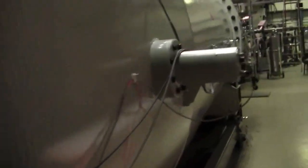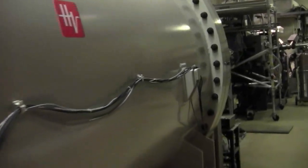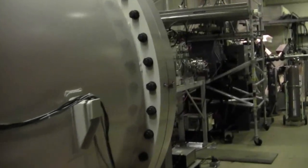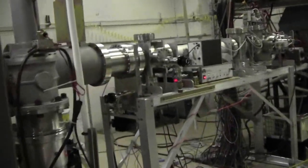We are passing alongside the acceleration column that separates the high voltage terminal from the front end of the accelerator which is at ground potential. The ions gain energy as they move through this tube.